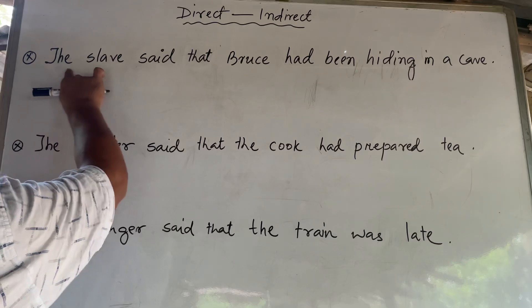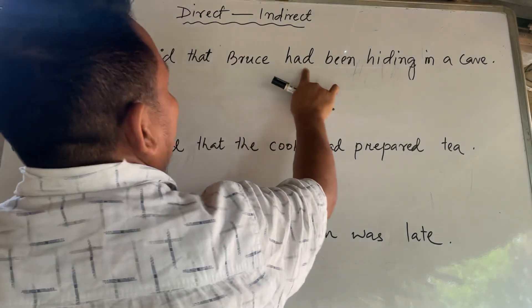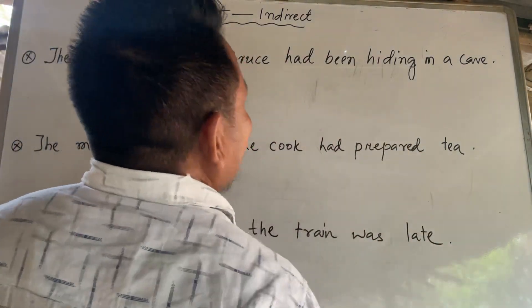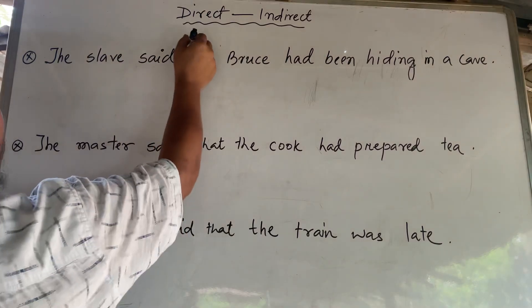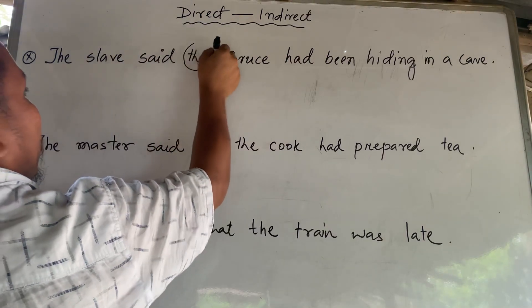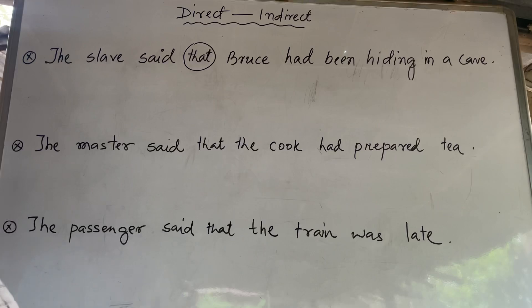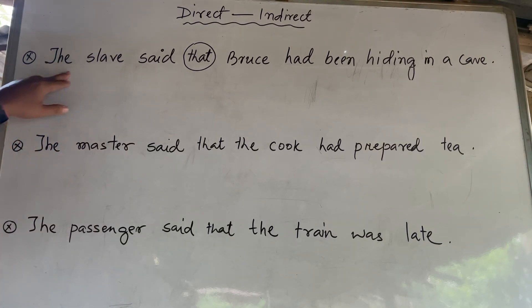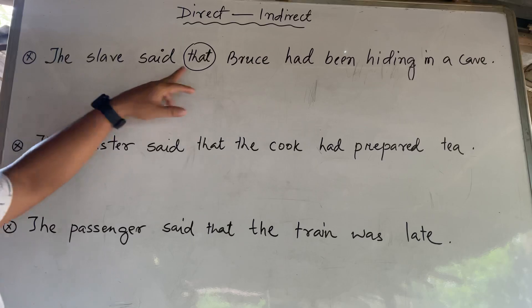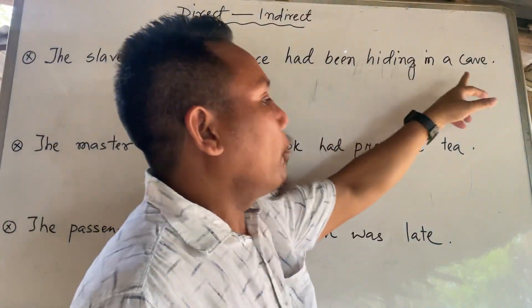Let's say that Bruce had been hiding in a cave. That means the main target is the reported verb, which will be graded with dominion.